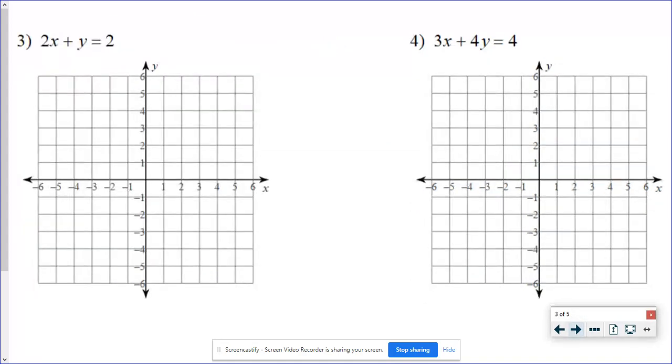In these two problems, I don't have slope-intercept form. But number 3 is very close. I would just need to subtract this 2x to get the y by itself. So I'm going to have that y equals negative 2x plus...